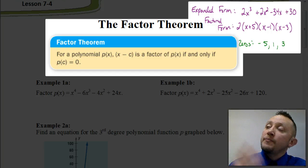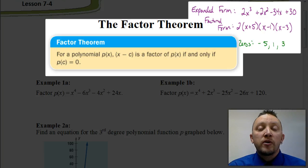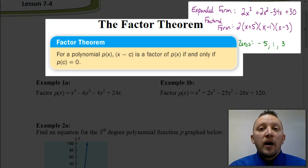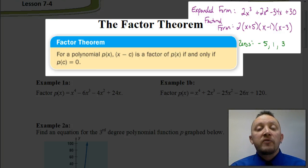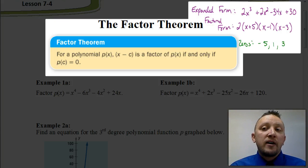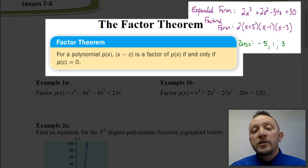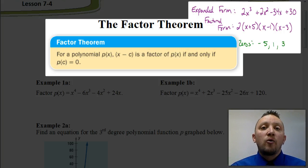The first piece we see is something written in expanded form or standard form. We have the polynomial 2x cubed plus 2x squared minus 34x plus 30. We could factor that down — and we're going to learn how to do that in a future video — but if we did, we'd get the factored form: 2 times (x plus 5) times (x minus 1) times (x minus 3). Once we have the factored form, we find the zeros by setting each factor equal to zero, giving us negative 5, 1, and 3.